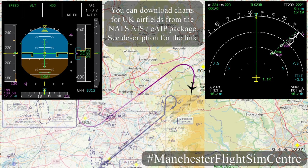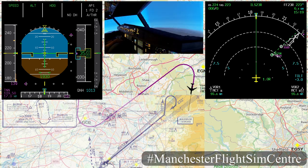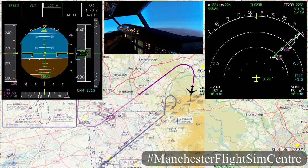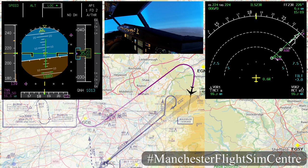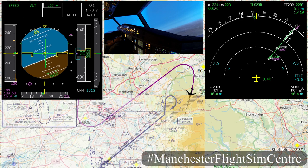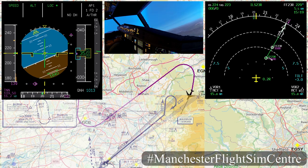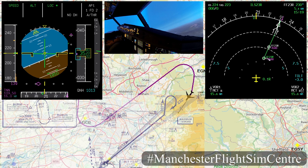We're now on our closing heading to the localizer and cleared for the approach. I'm going to arm the localizer — LOC blue — and straight into LOC star. We can see now the localizer is alive and the aircraft is turning to establish on that localizer, a track of 232 degrees.